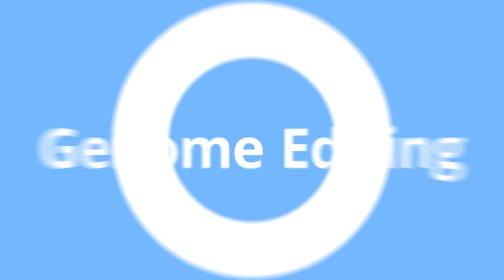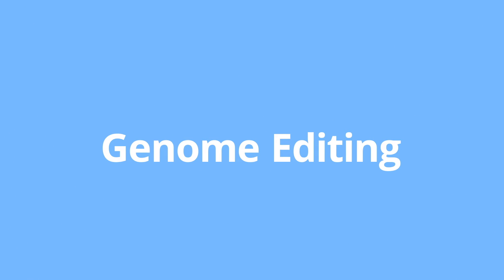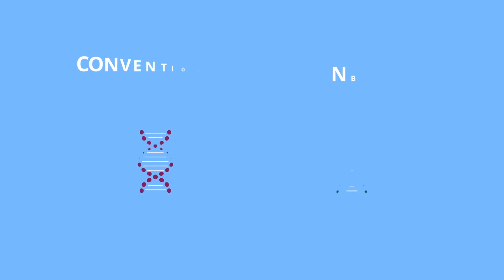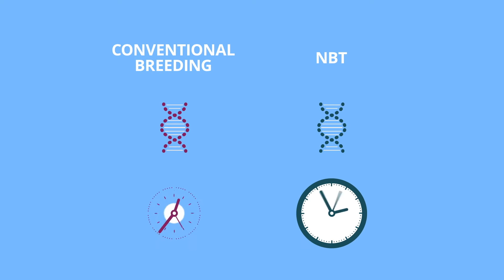An example of an NBT you may have heard of is genome editing. Similar to breeding, genome editing can be used to make changes to genes, but with genome editing it can be done more quickly, and it is more precise than GM and conventional breeding.